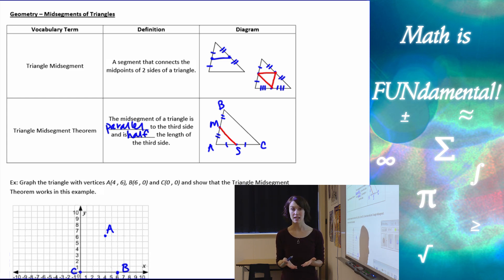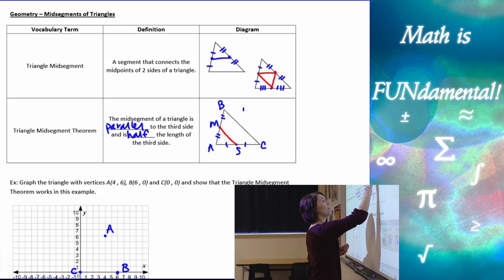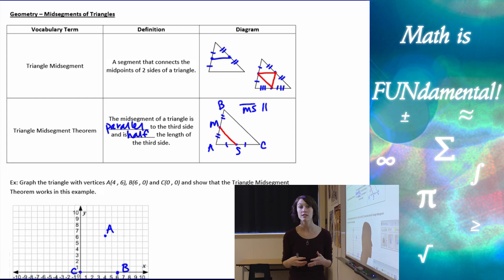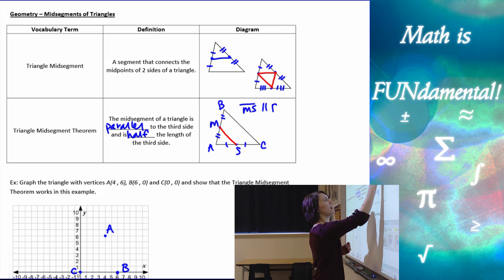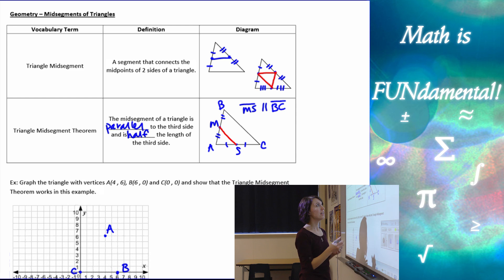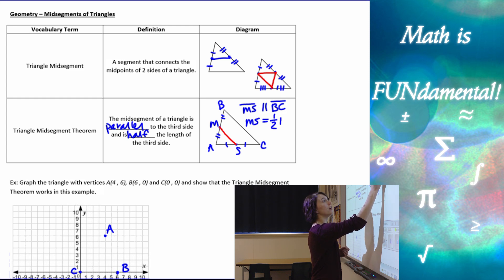So what this theorem is telling us is that MS, the segment MS, is going to be parallel to the third side, so it's going to be parallel to the side that it's not touching, if you want to think of it that way. So it's parallel to the side BC, and it says that the length MS is equal to half of the length of BC. So that's what the triangle mid-segment theorem gives us.